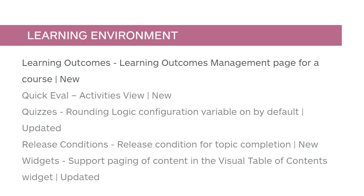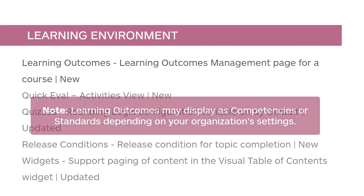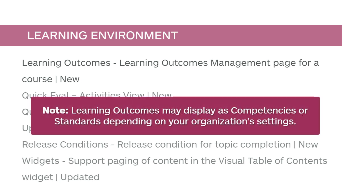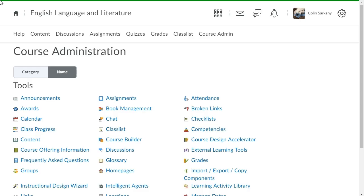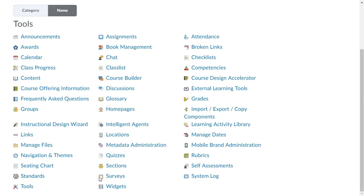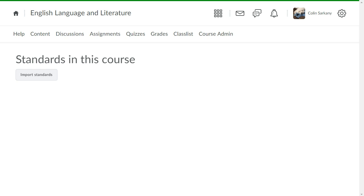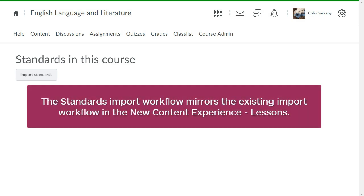Course Admin now features a link to import outcomes from the Achievement Standards Network into your courses. Learning outcomes can still be imported using the new content experience, lessons, and outcomes imported in one location will be reflected in the other. Note: learning outcomes may display as competencies or standards depending on your organization's settings. From Course Administration, navigate to Standards, where you can view existing standards aligned to your course or import new ones. The Standards Import Workflow mirrors the existing import workflow in the new content experience, lessons.